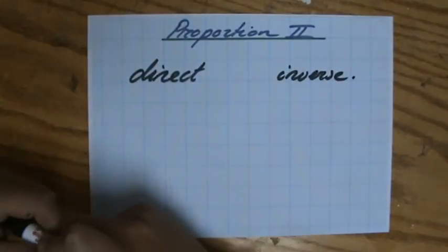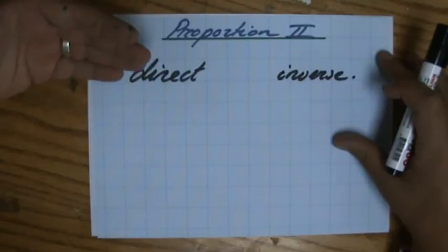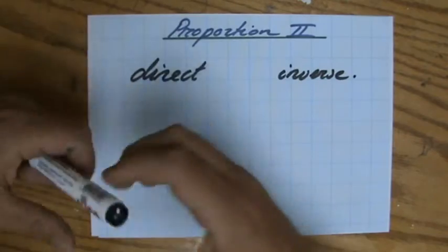In the previous video, which you can find on my website explainingmaths.com, I have shown you an example of direct proportion. If one variable increases by a particular factor, it becomes twice as big, then the other variable will also become twice as big.